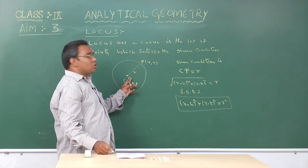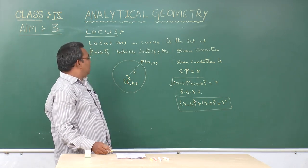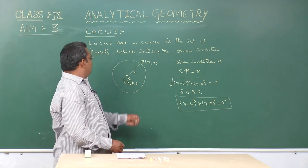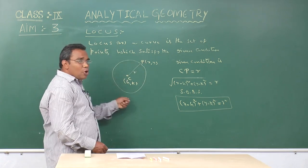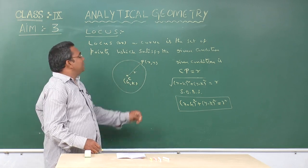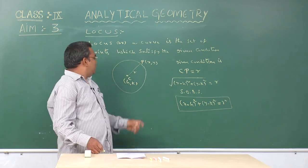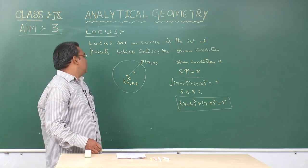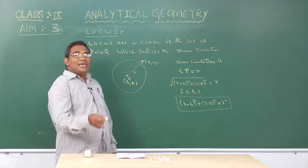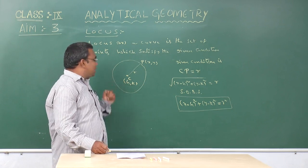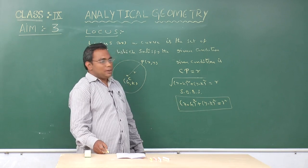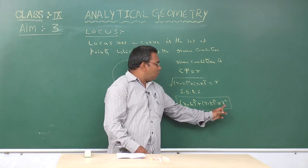Here, C is called the center of the circle and r is called the radius of the circle. The locus of points which are at a constant distance from a fixed point forms a circle. The fixed point C is called the center and the constant distance r is called the radius. The equation of the circle with center (H, K) and radius r is: (X minus H) whole square plus (Y minus K) whole square equals r square.